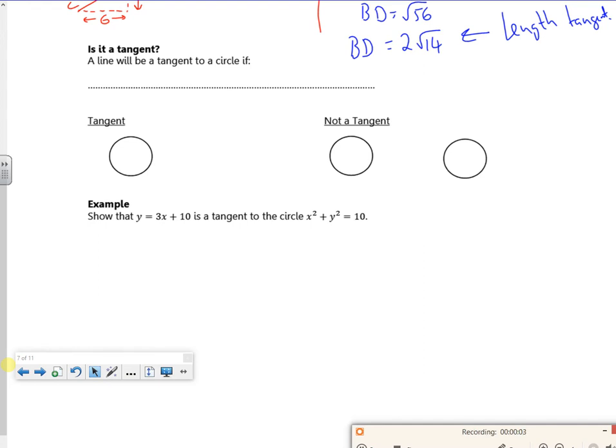Right, you ready? So last video and then we consolidate on the exam questions. So a line will be a tangent to the circle if it intersects the circle once. Now we've actually done that.